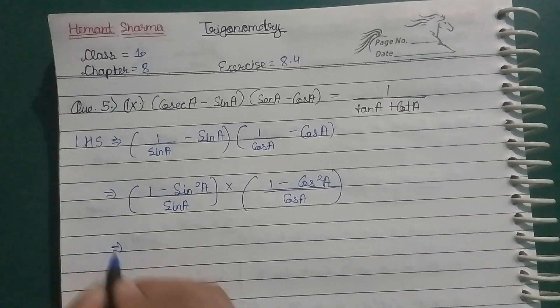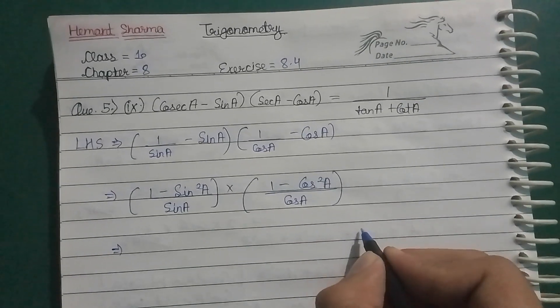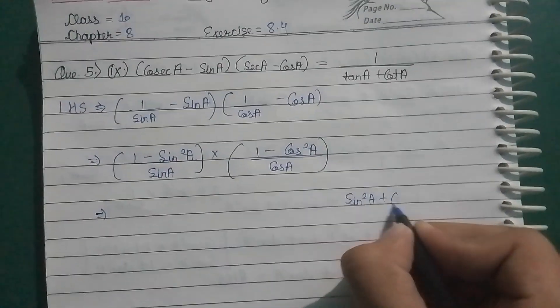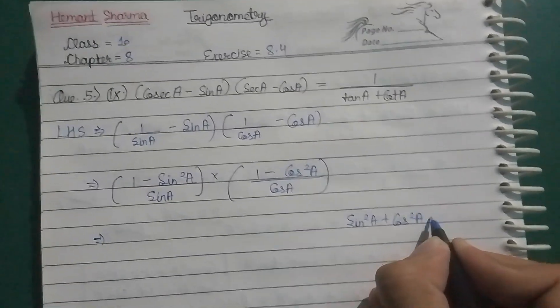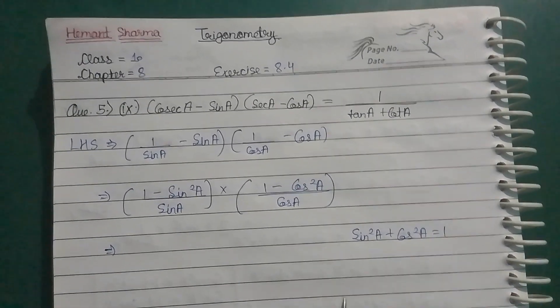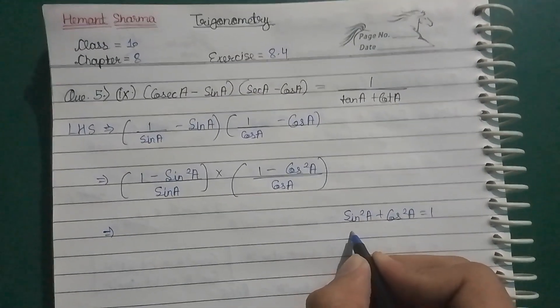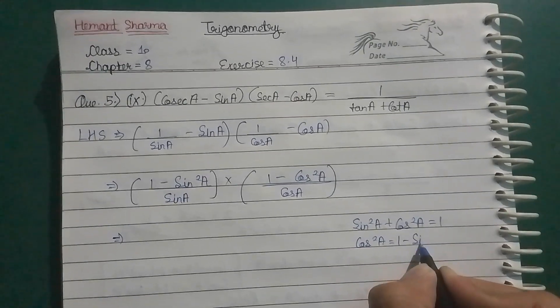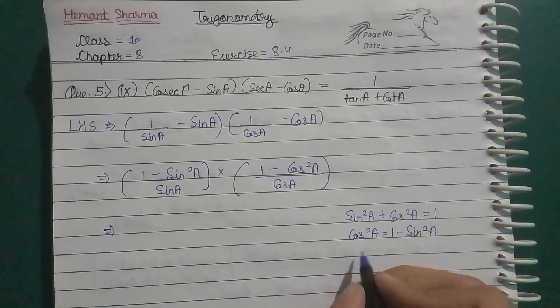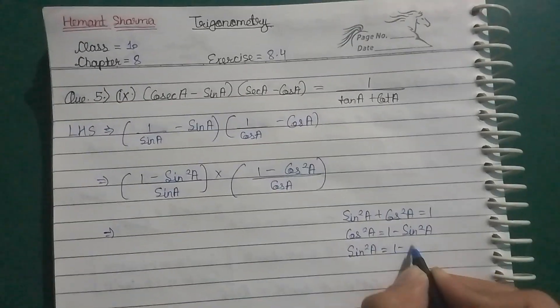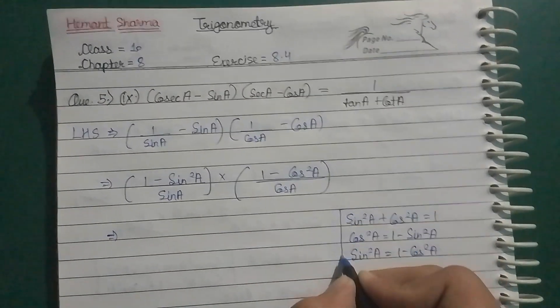Next step in our identity: sin square A plus cos square A equal to 1. Now guys, a key identity can become three identities. How can it become? Cos square A equal to 1 minus sin square A, and then sin square A equal to 1 minus cos square A. And this is used here.